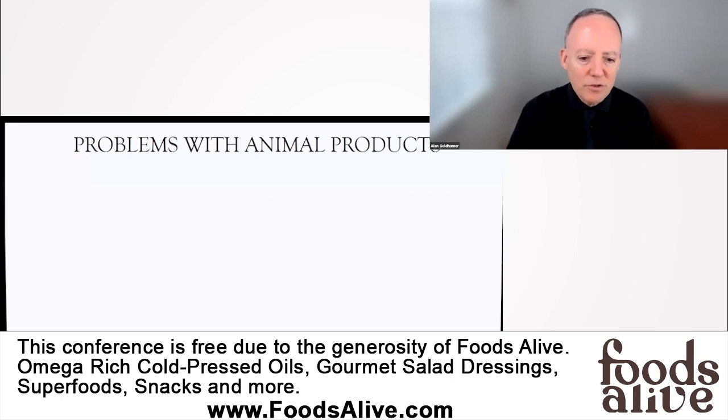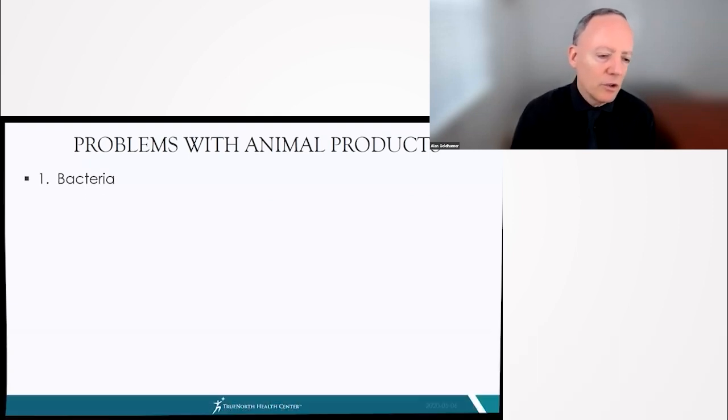So the problems with animal foods include bacteria. For example, if you don't cook the dead, decaying flesh adequately, you can die because the type of bacteria that live on animals are often the same type of bacteria that live with us.